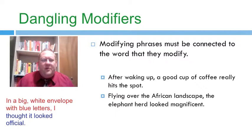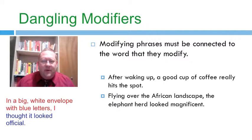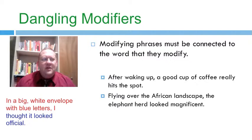Look carefully at this next sentence from the paragraph we read in the beginning: 'In a big, white envelope with blue letters, I thought it looked official.' You'll notice there's no noun — the phrase 'a big, white envelope with blue letters' doesn't modify anything in the sentence. What it modifies is the noun 'the letter,' which we know from other sentences in the paragraph, but that noun does not appear anywhere in this sentence. So grammatically, it reads as if I, the speaker, am in a big white envelope with blue letters. This is a dangling modifier — a phrase that modifies a noun that's not present in the sentence.